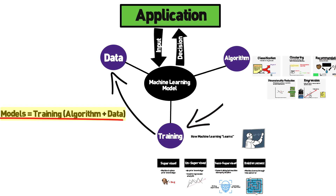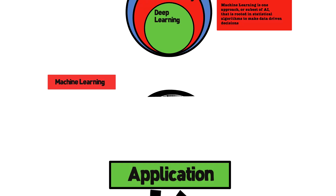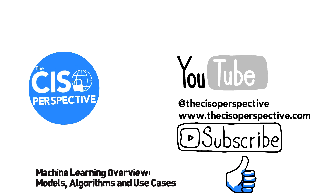Taking one of the most complex subjects in modern time and breaking it down in less than 10 minutes is almost impossible to do it justice. But the idea here is for you to grasp the overall concept of the different components within machine learning and understand how it all comes together. For our next video, we're going to take a deep dive into machine learning use cases and examples of how it's already shaping the future of IT and cybersecurity. So that does it for this video — I hope you found it informative. Please subscribe if you want to see more videos about IT and cybersecurity concepts, and please hit like on the video as it greatly helps the YouTube algorithm. Until next time, this is Andy with the CISO Perspective. Stay safe.